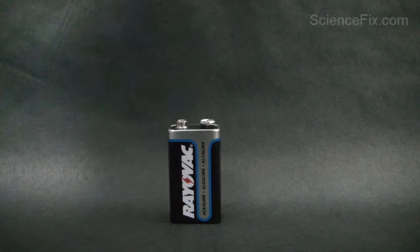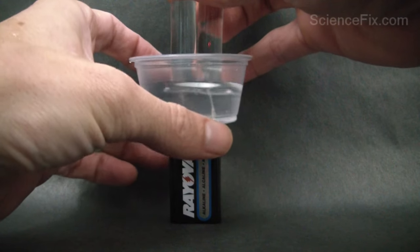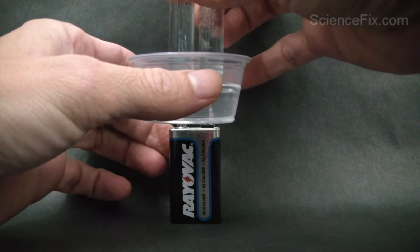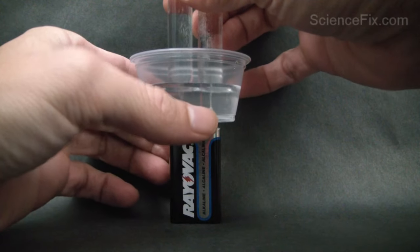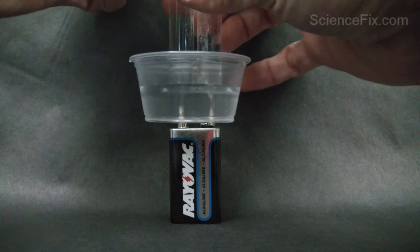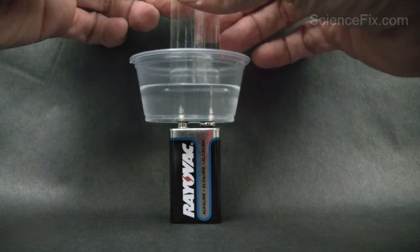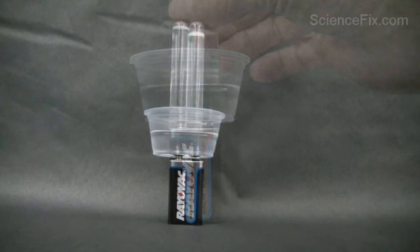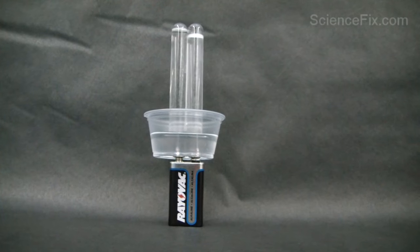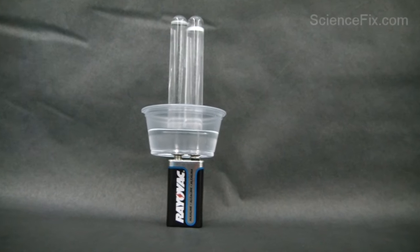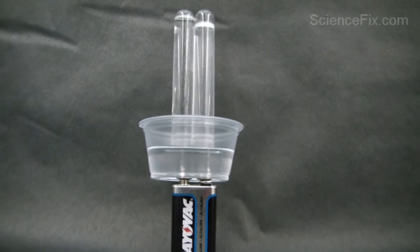In the container is going to be some water that has baking soda mixed into it. The baking soda in the water allows electricity to flow between the two metal tips of the push pins. Now you set them on the leads and the electricity can flow between the two push pins.